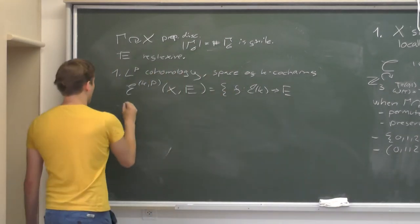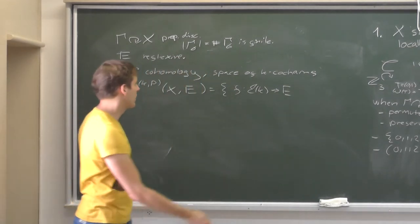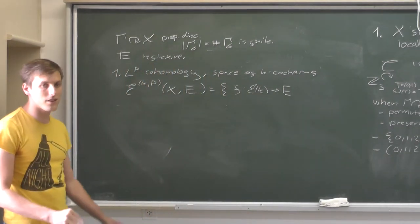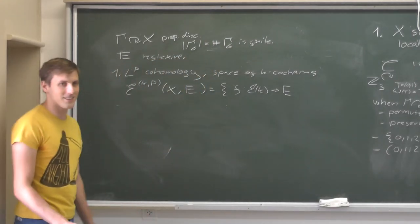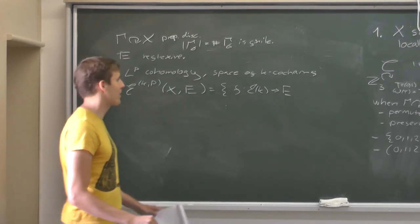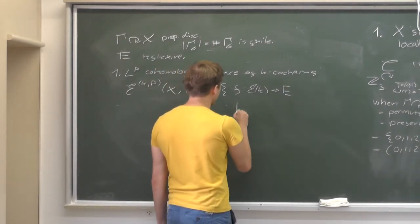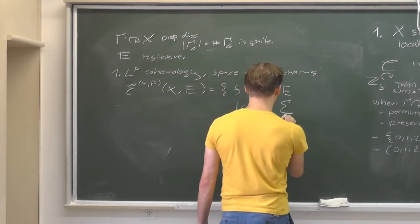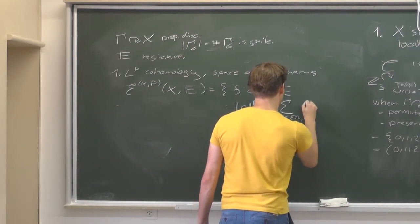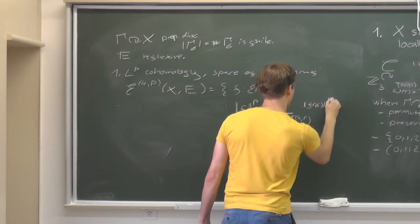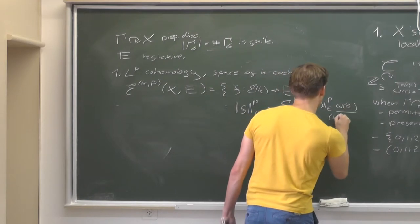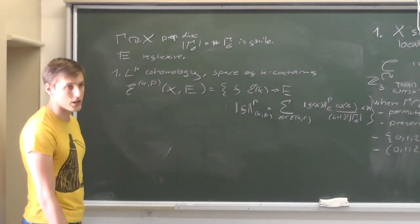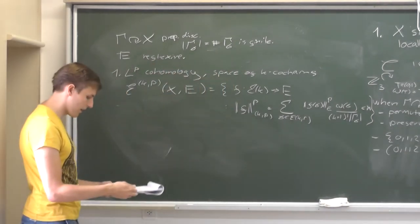I define the space of k-cochains: it will be all maps from oriented k-simplices into our Banach space. In LP cohomology we went to the reals; now we go into the Banach space. We require a summability condition: summing over all orbit representatives, taking the weights, with some normalization factor, these must be finite. This defines the k-P-norm, and these are your k-cochains.